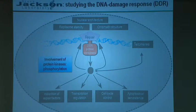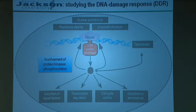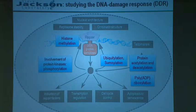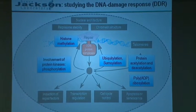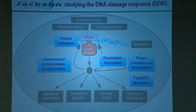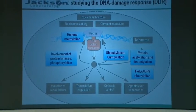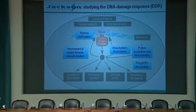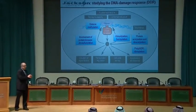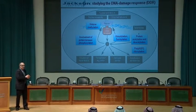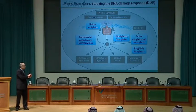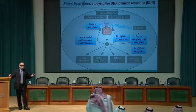DNA-PK, ATM, and ATR have highlighted how protein kinases play a very important role in the DNA damage response. But phosphorylation is just one way of controlling protein activity. Proteins are also controlled by other post-translational modifications. Over the years, my lab and others have learned that methylation on histones and non-histone proteins, protein acetylation, poly-ADP ribosylation, ubiquitylation, and SUMOylation all control DNA damage responses.